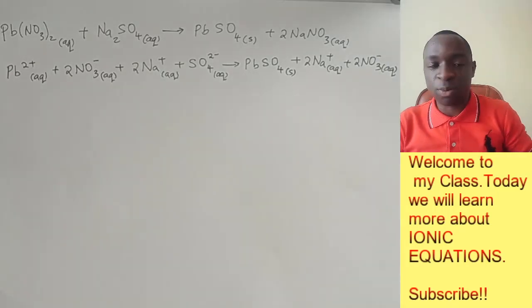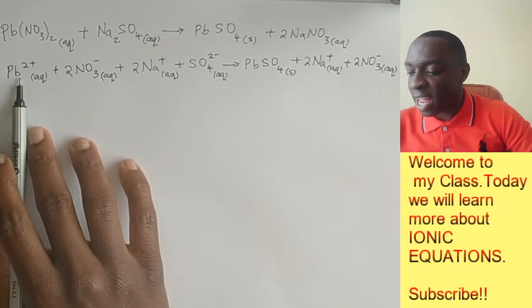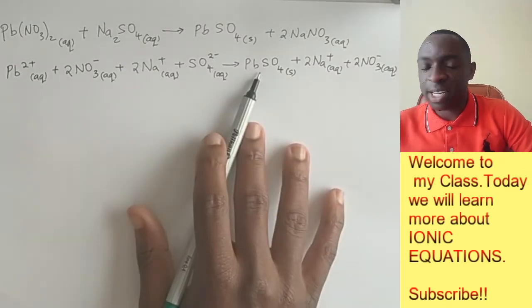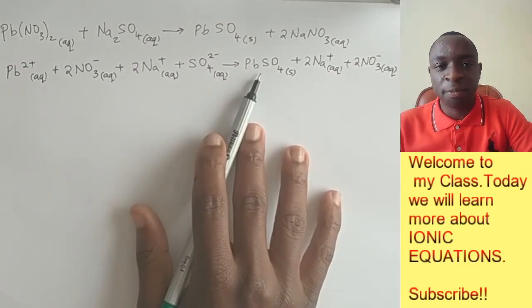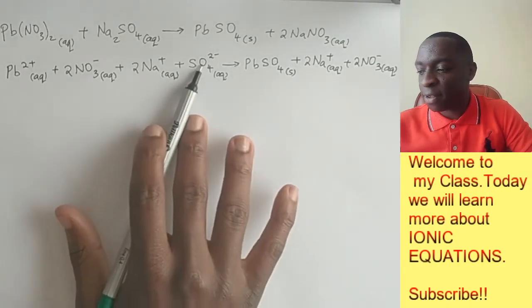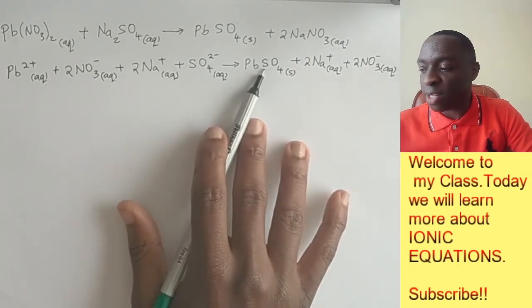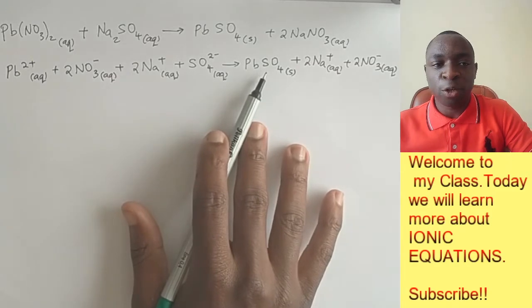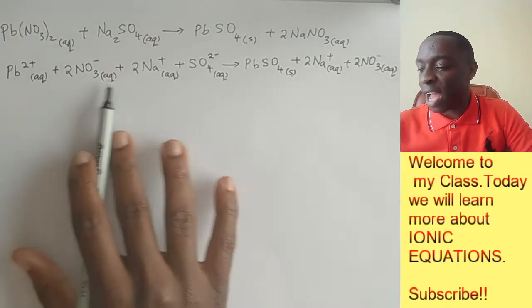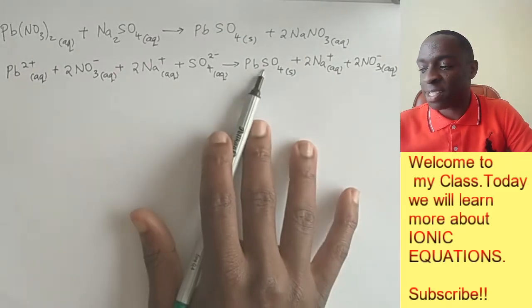So let us see like this one. So have a look at lead. Lead ions was converted into lead sulfate. The same way the sulfate ion was converted into the lead sulfate. So these two ions are the ones that reacted to give us lead sulfate.